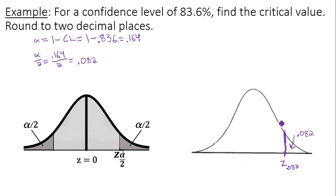Well to use Google Sheets to find my data value I need to know the area to the left. The area to the left of my data value is 1 minus the area to the right, 1 minus 0.082. This gives me 0.918.